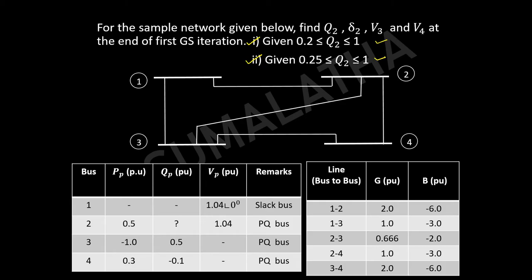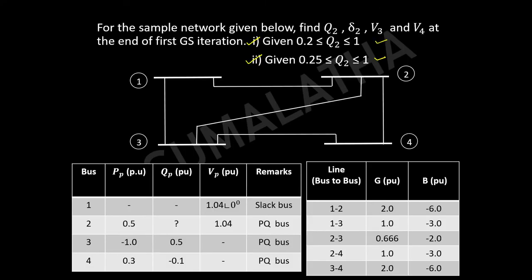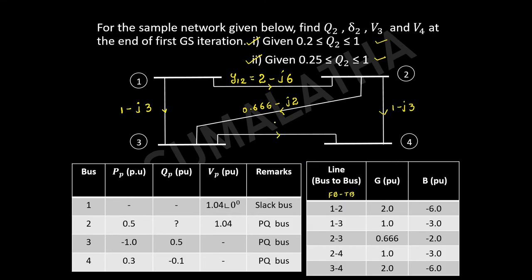First and foremost, you have to find out the bus admittance matrix. Read the data and form the bus admittance matrix. The line connected between 1 and 2 is 2 − j6, Y13 is 1 − j3. You can give directions: 1→2, 1→3, 2→3. For 2→3 you will have 0.667 − j2, then 2→4 you will have 1 − j3, and 3→4 you will have 2 − j6.